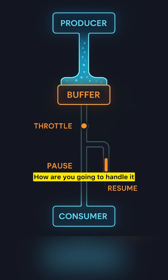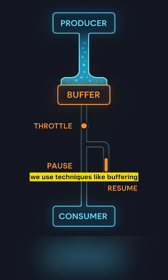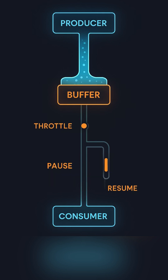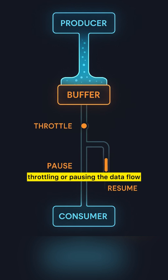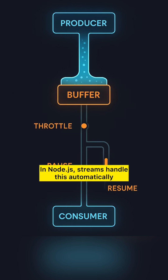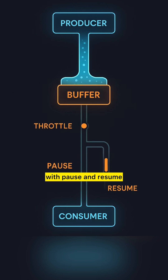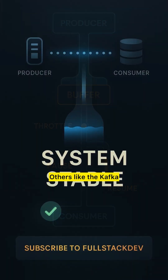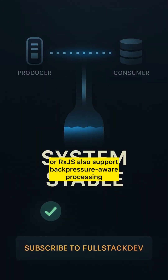How are you going to handle it? To handle back pressure we use techniques like buffering, throttling, or pausing the data flow. In Node.js, streams handle this automatically with pause and resume. Others like Kafka or RxJS also support back pressure-aware processing.